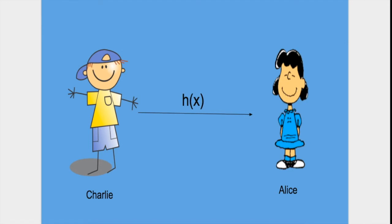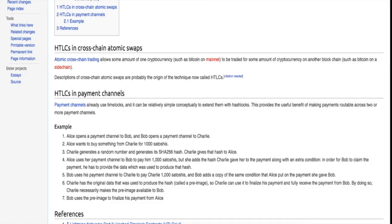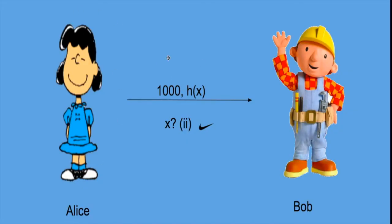Alice uses her payment channel to Bob to pay him 1000 satoshis, but she adds the hash Charlie gave her to the payment along with an extra condition. In order for Bob to claim the payment, he has to provide the data which was used to produce that hash. So Alice pays Bob 1000 satoshis, gives him H(X) which was given to her by Charlie, and gives a condition to Bob that if you want to retrieve these 1000 satoshis, you need to give me X.